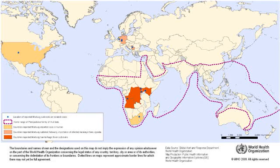Replication results in full-length positive-stranded antigenomes that are in turn transcribed into negative-stranded virus progeny genome copies. Newly synthesized structural proteins and genomes self-assemble and accumulate near the inside of the cell membrane. Virions bud off from the cell, gaining their envelopes from the cellular membrane they bud from. The mature progeny particles then infect other cells to repeat the cycle.